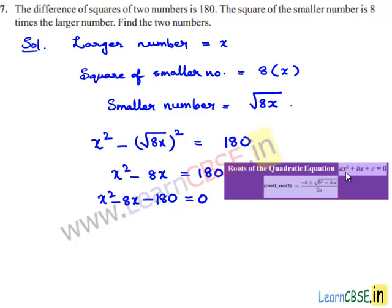The roots of the quadratic equation ax² plus bx plus c equals 0 are given by: minus b plus or minus the square root of b² minus 4ac, all divided by 2a.